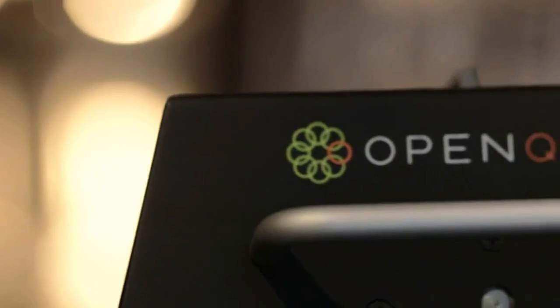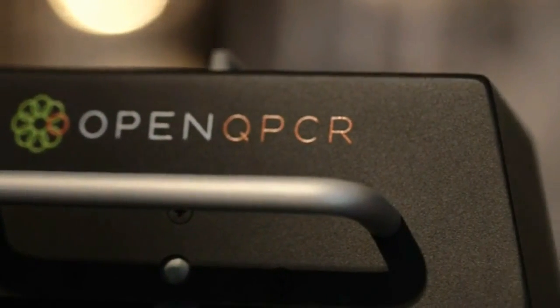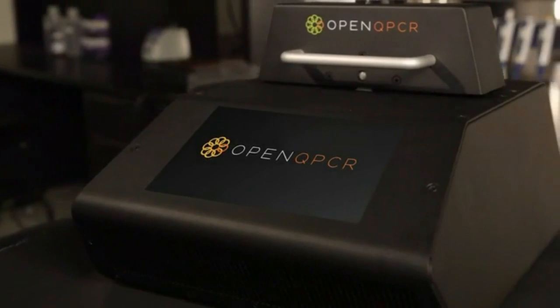My name is Josh Perfetto and I'm the founder of Chai Biotechnologies. We've created OpenQPCR, the world's first open-source real-time PCR thermocycler, costing around the price of a 3D printer.